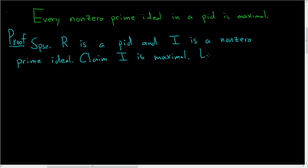So we're going to let J be an ideal such that I is contained in J which is contained in R. And the goal is to show that J is equal to I or J is equal to R. That's precisely what it means for I to be maximal.